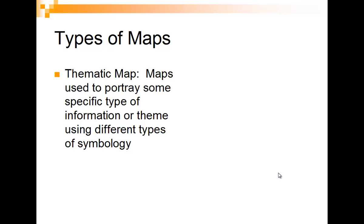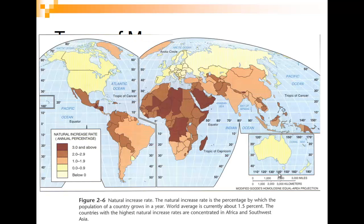In the previous lecture we talked about graduated symbol maps to show points — the bigger the symbol, the more of something, and in that case it was particulate matter. Or we color in a county based on an attribute. You can see here this is the rate of natural increase, and here is the color scale that we have.